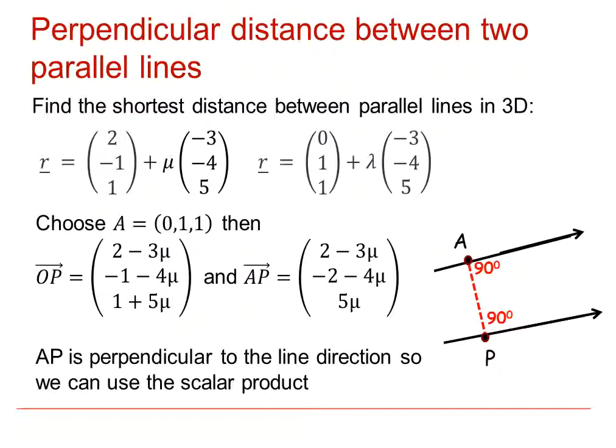If we're using the scalar product method, then remember that AP will be perpendicular to the direction of the line, and hence the scalar product must equal zero.